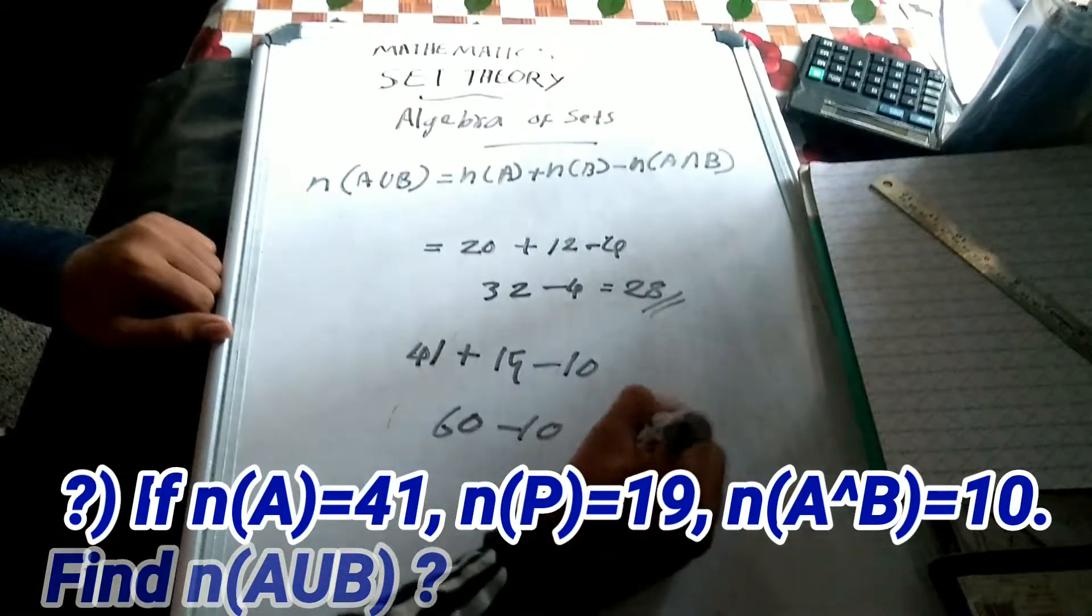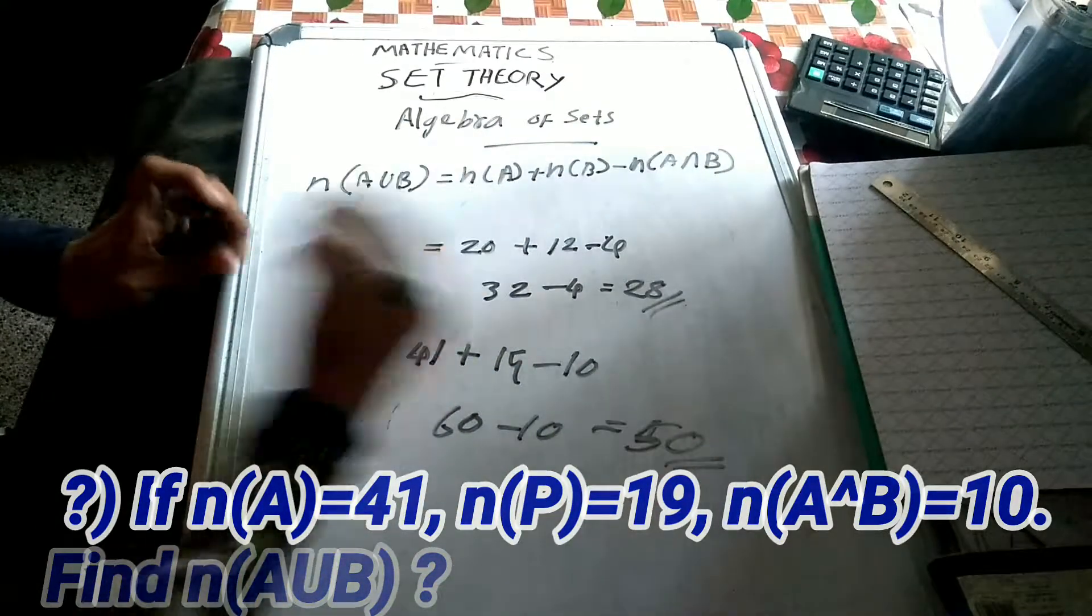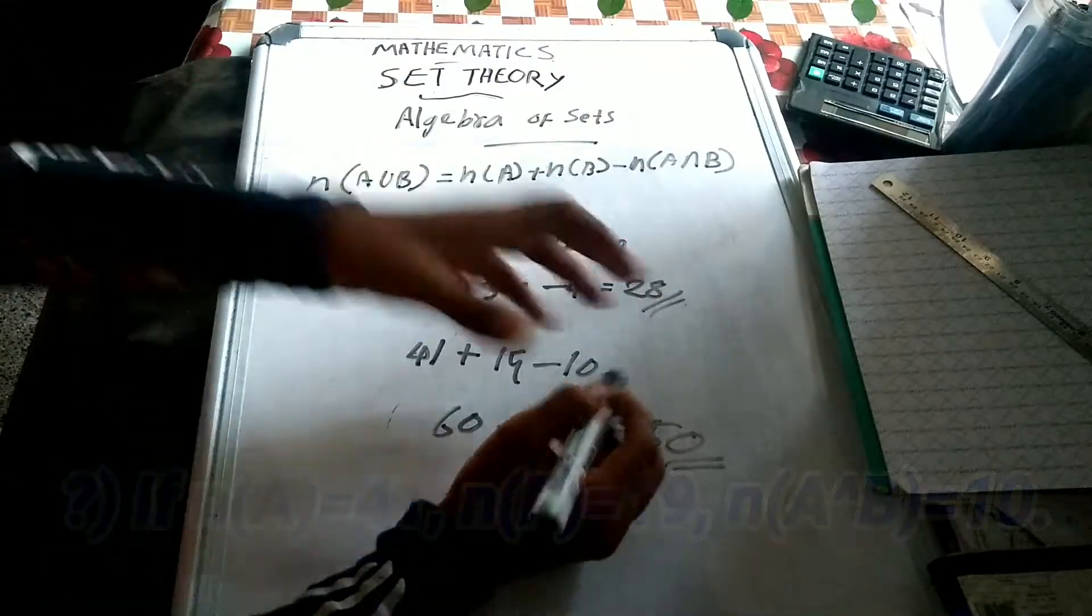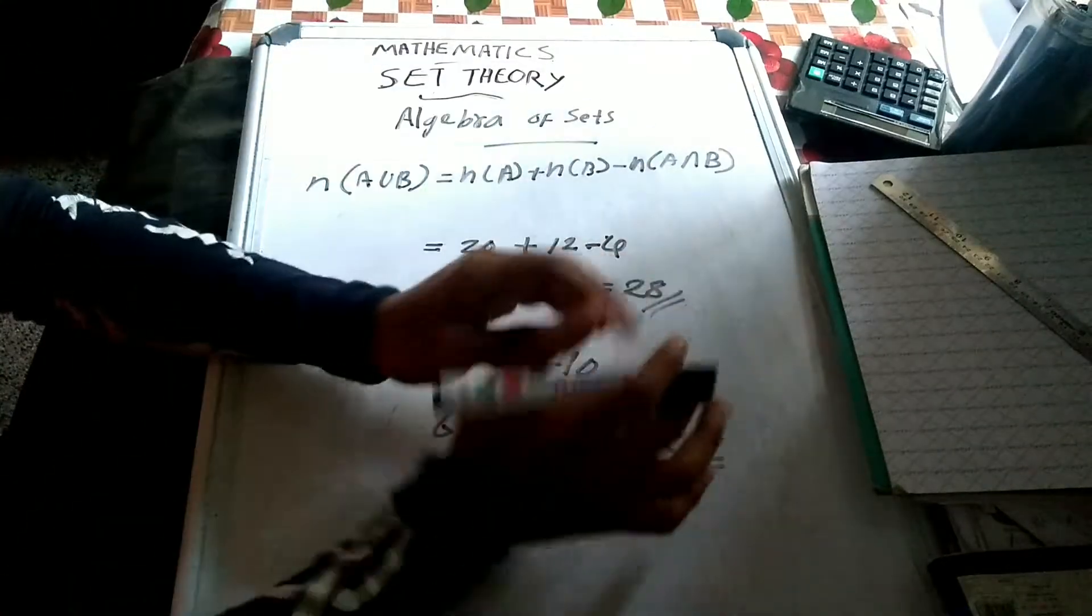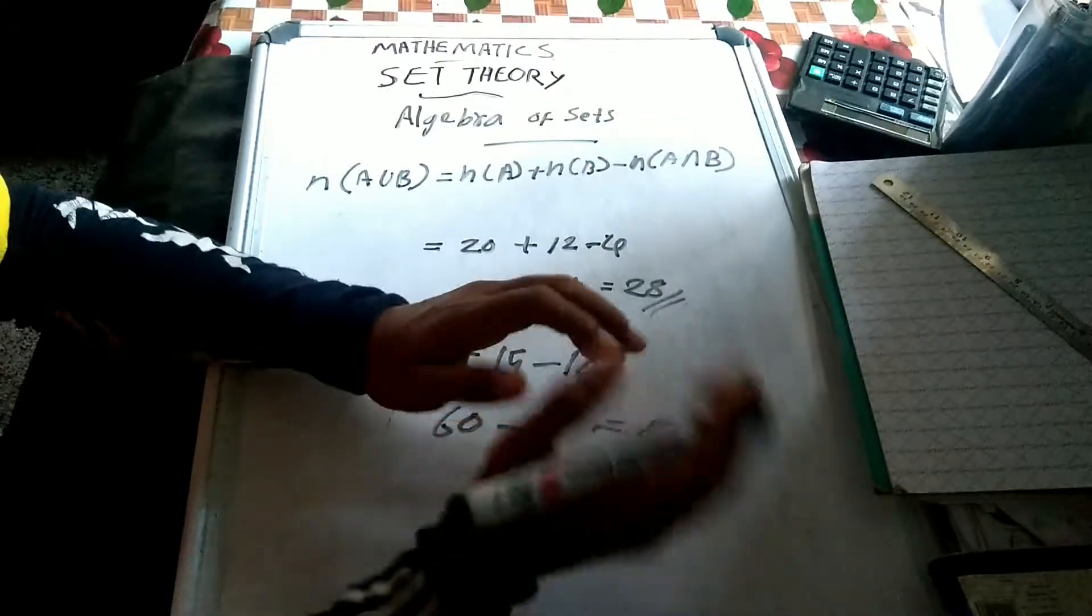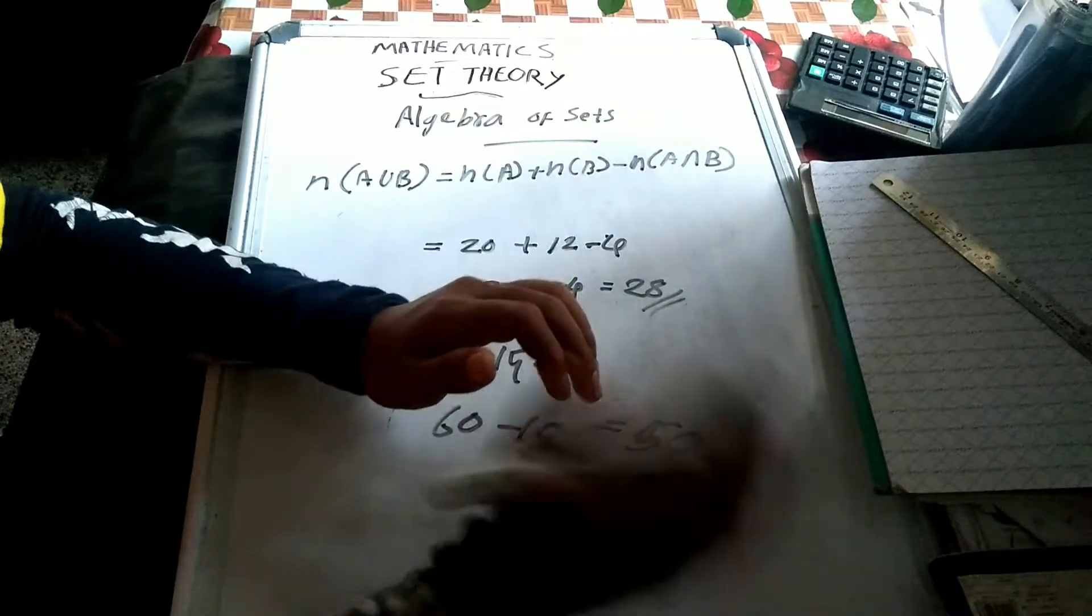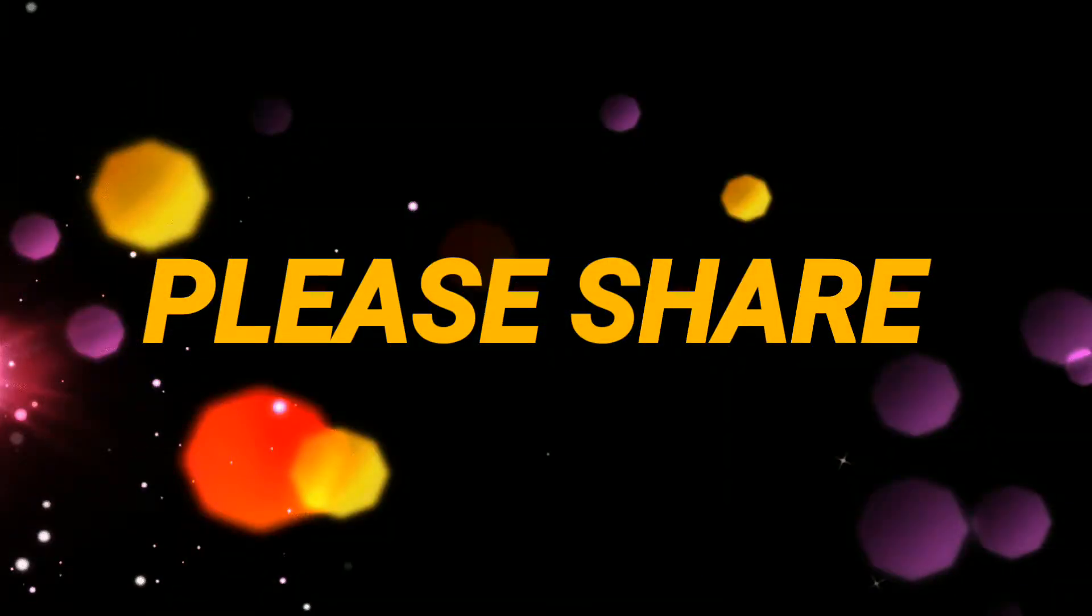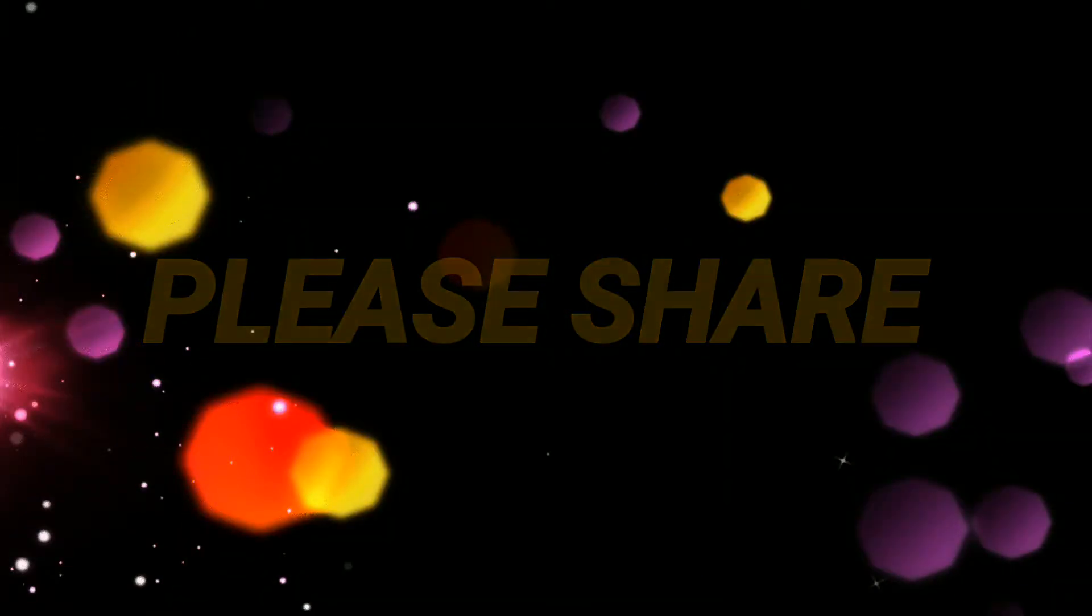So 41 plus 19 minus 10 equals 50. Thanks for watching.